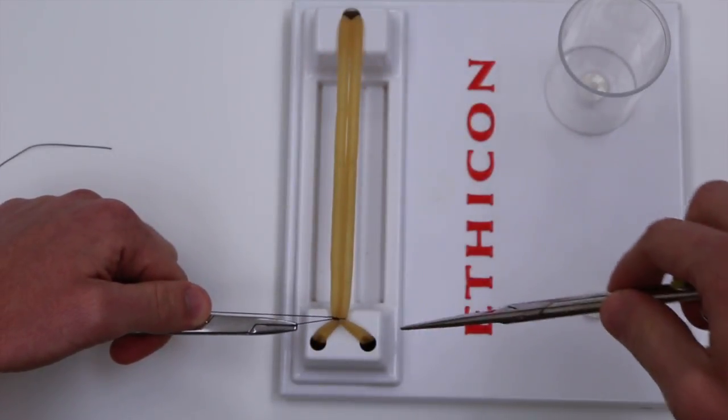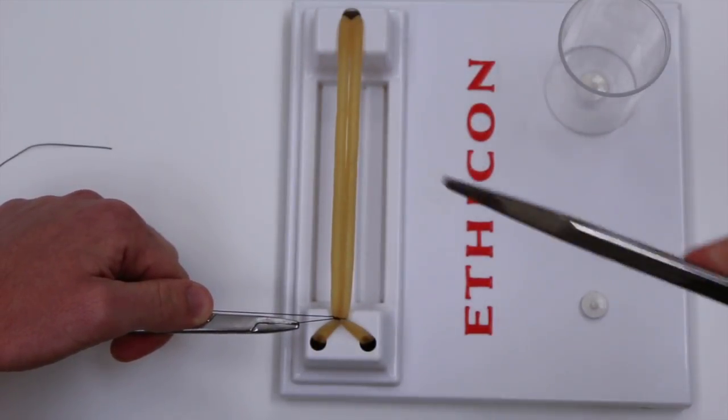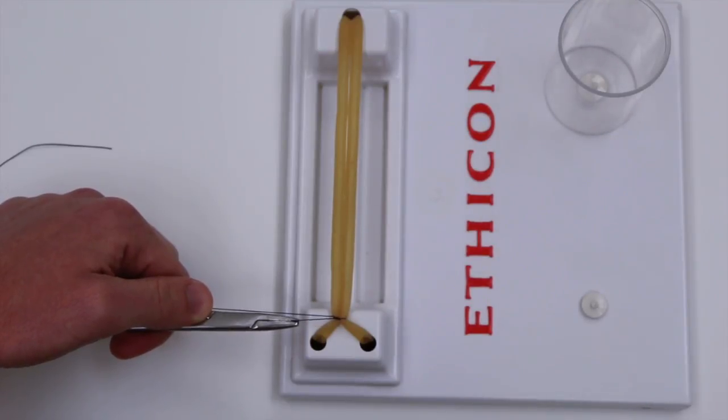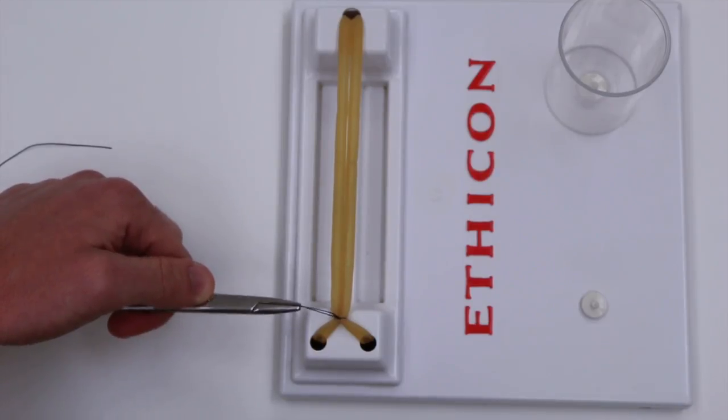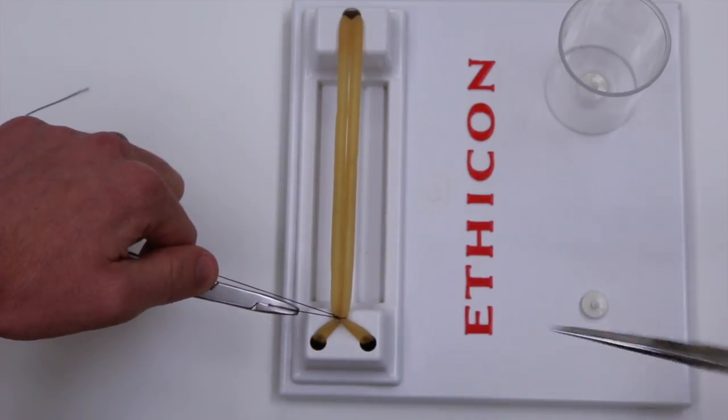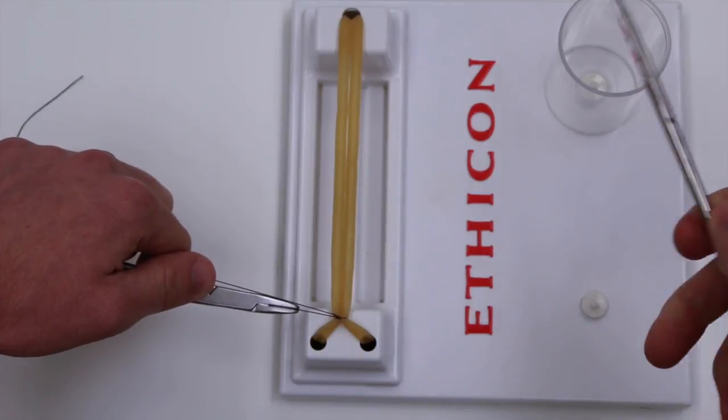So you finish tying your knot which in the case of silks or any other braided suture is after about four knots but in your monofilaments such as proline you're going to want six knots.